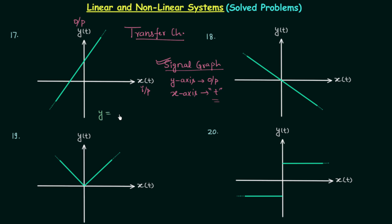Using the form y = mx + c, we have y(t) = m·x(t) + c. The slope m is not required for checking linearity, so don't waste time calculating it even if values are given. For example, with values 4 and -2 the slope would be 2, but we leave m as is. The intercept is equal to 4, so the equation is y(t) = m·x(t) + 4.